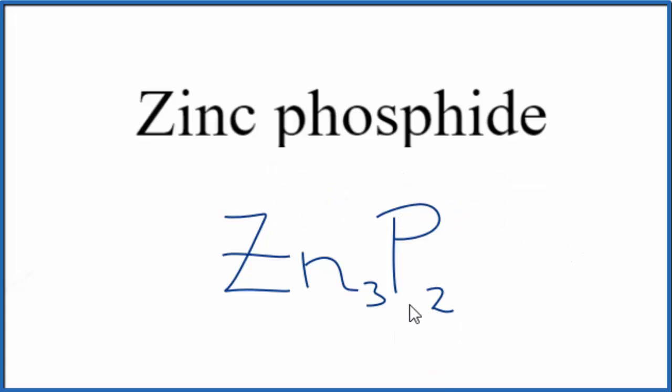And this is the formula for zinc phosphide, Zn3P2. But let's check our work.